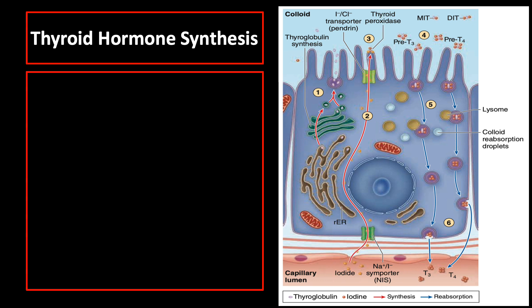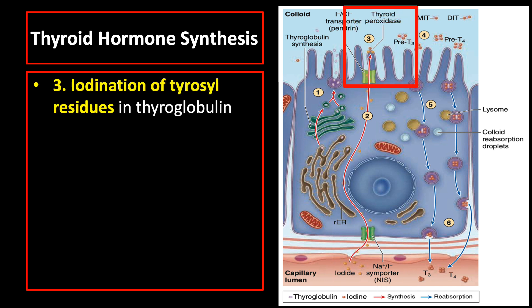The third step is iodination of tyrosine residues in thyroglobulin with either one or two atoms of iodine, occurring in the colloid after oxidation of iodide to iodine by membrane-bound thyroid peroxidase on the microvilli surfaces of thyrocytes.